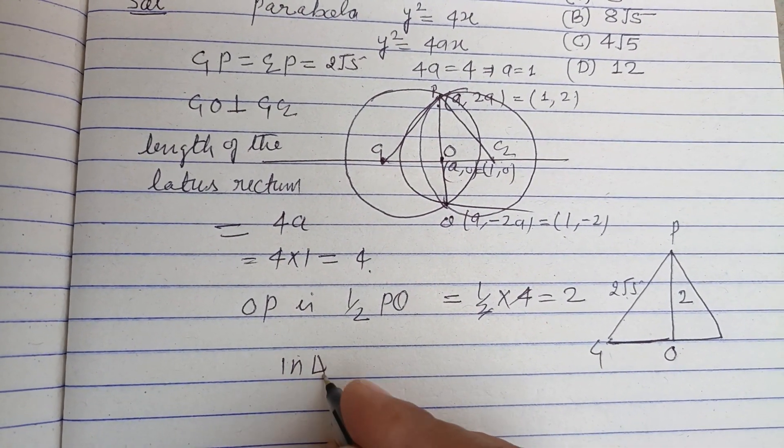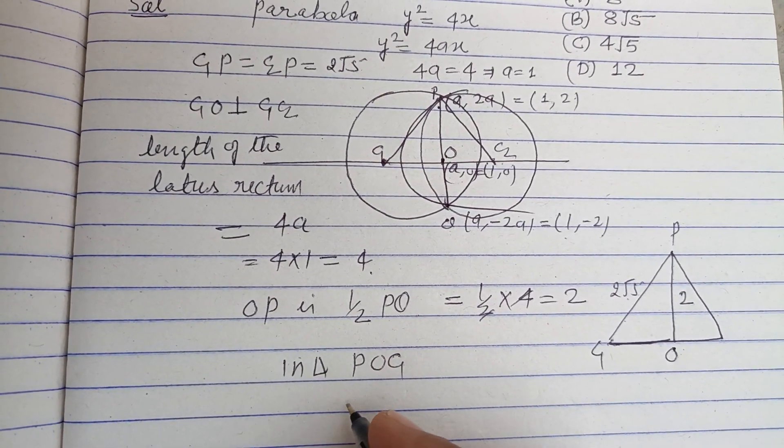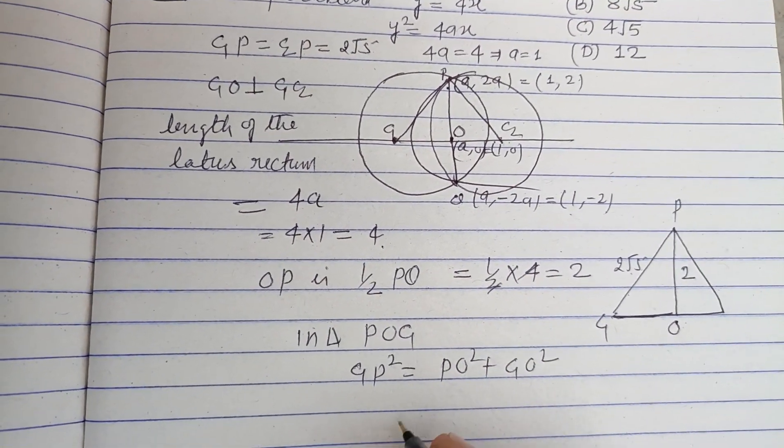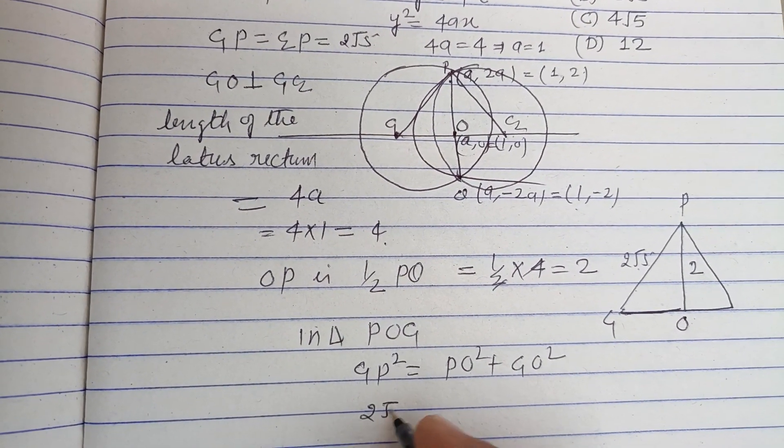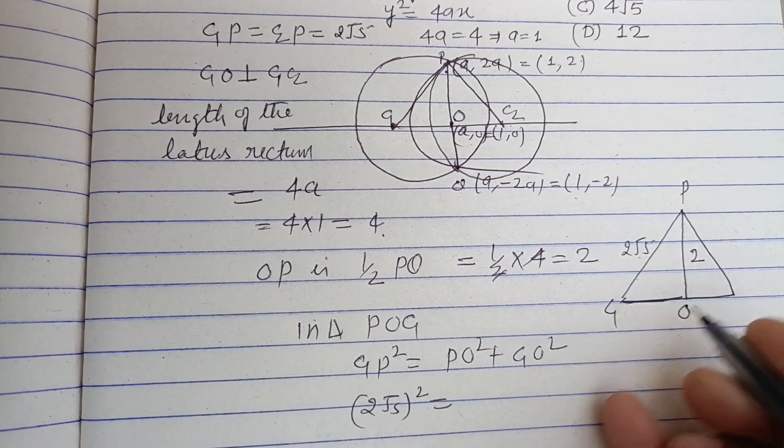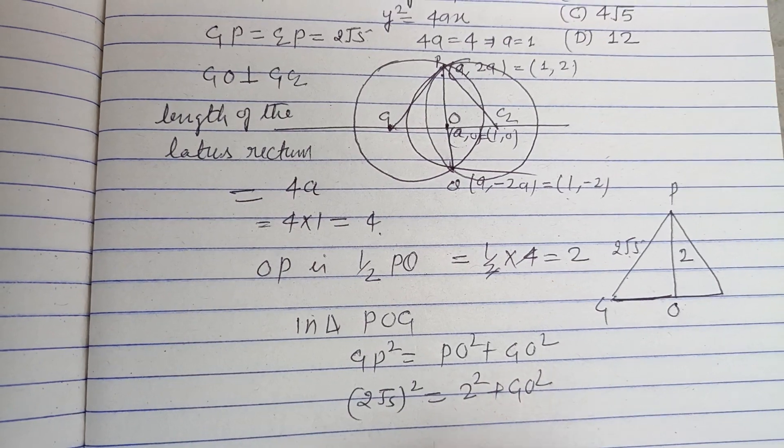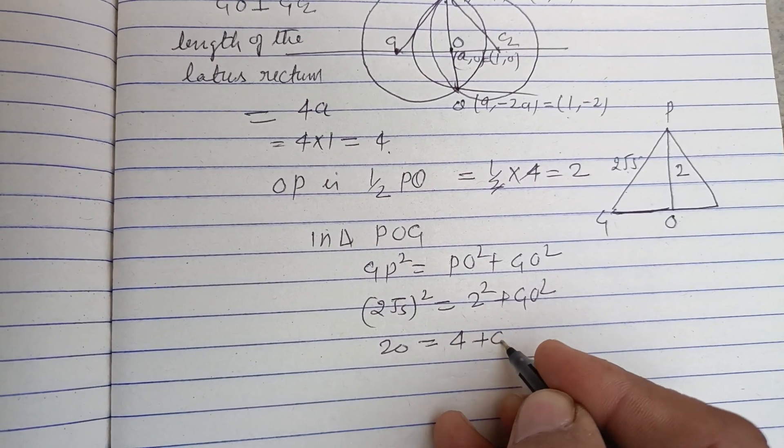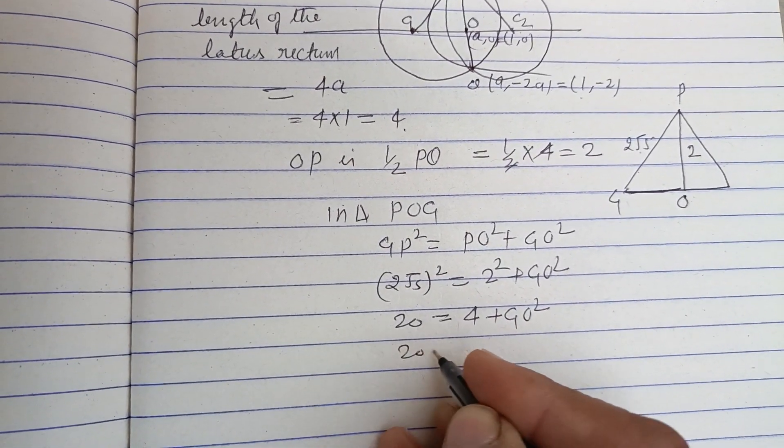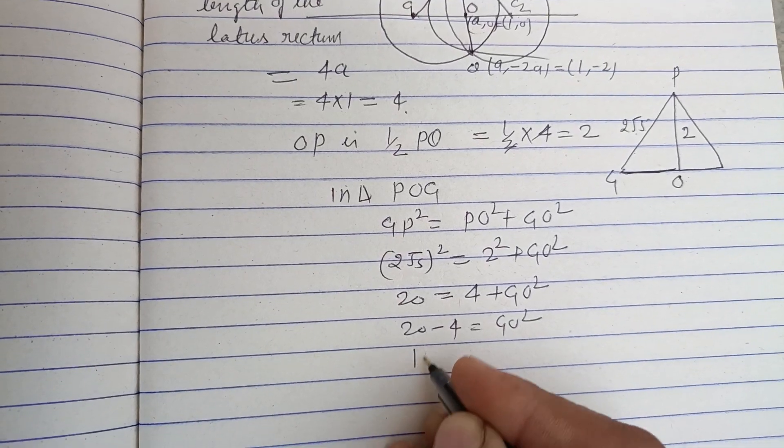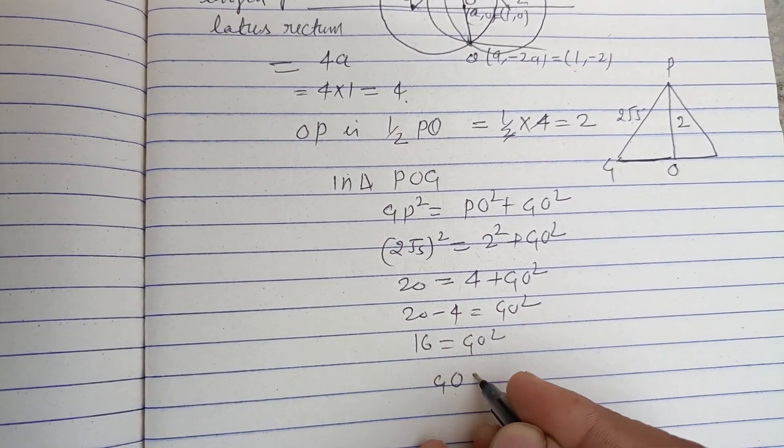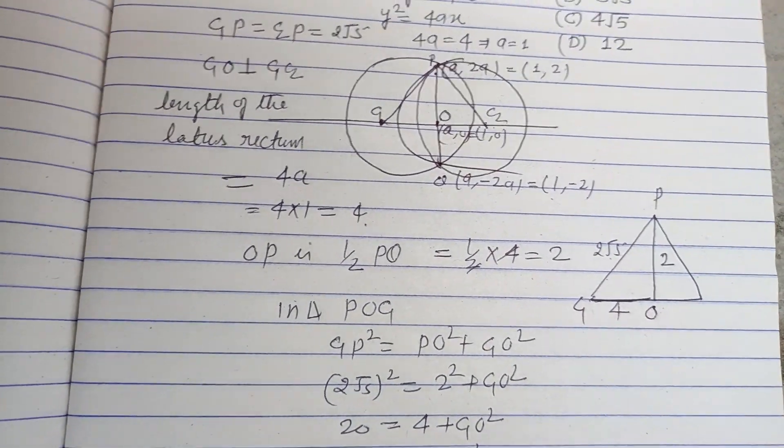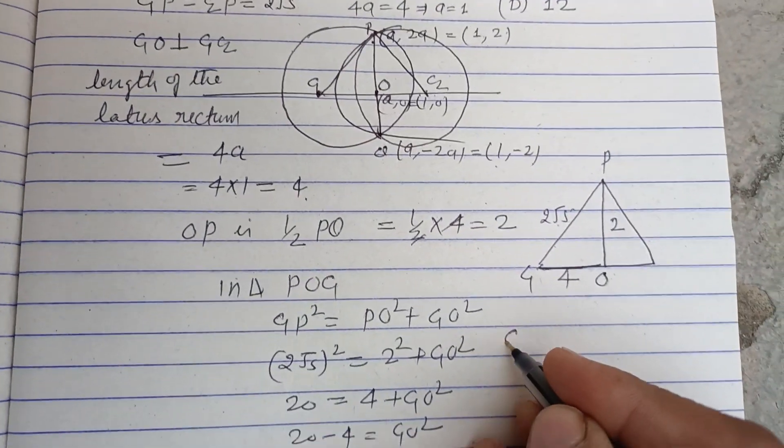In right angle triangle POC1, C1P² = PO² + C1O². So (2√5)² = 2² + C1O², which gives 20 = 4 + C1O². Therefore C1O² = 16, so C1O = 4.